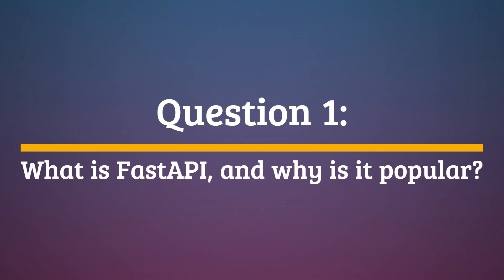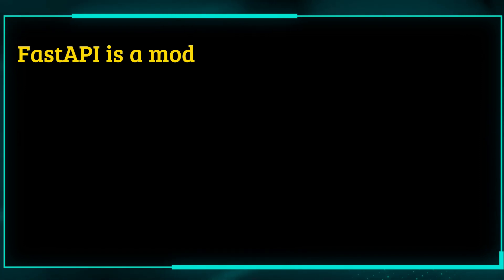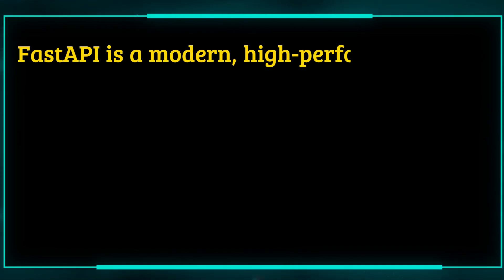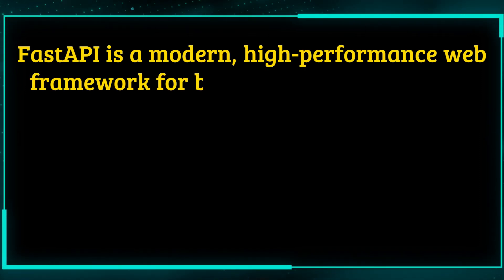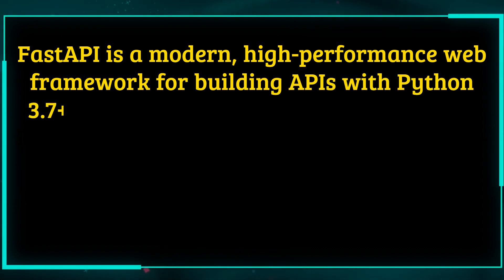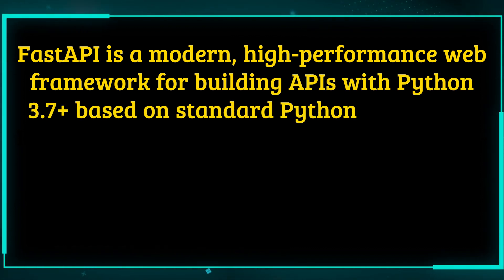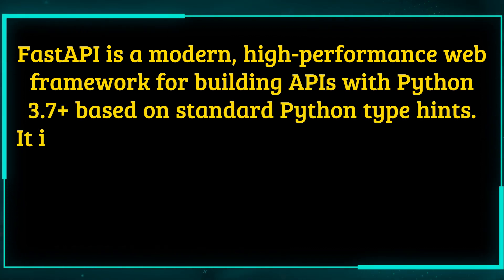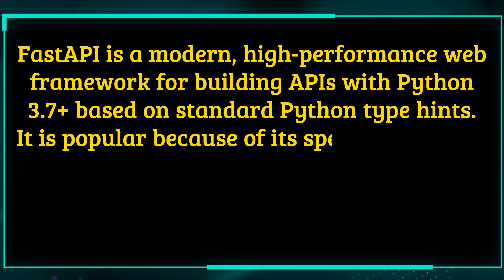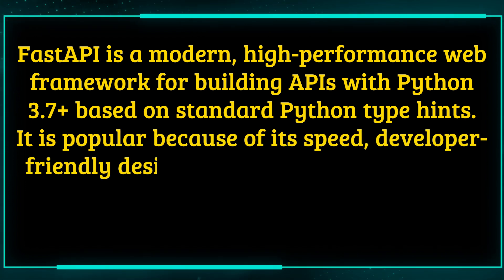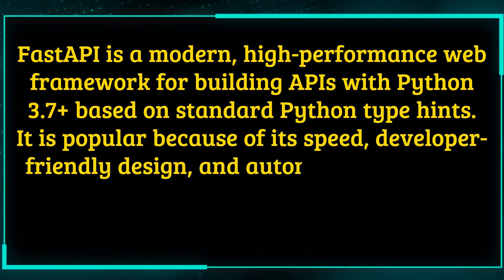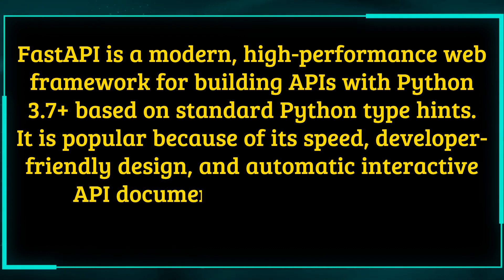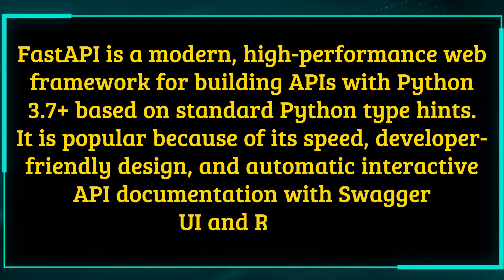Question 1: What is FastAPI, and why is it popular? FastAPI is a modern, high-performance web framework for building APIs with Python 3.7+ based on standard Python type hints. It is popular because of its speed, developer-friendly design, and automatic interactive API documentation with Swagger UI and Redoc.